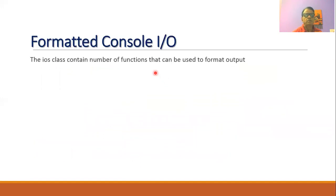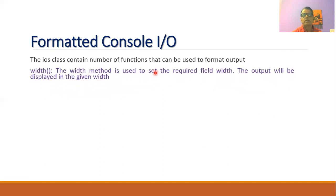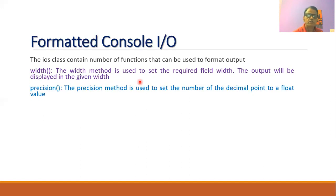Now let us look at certain formatted console input/output operations. The ios class contains a number of functions that can be used to format the output. Many times while writing C++ programs we use unformatted input and output, but it is also possible to use formatted input and output. For example, the width() function is used to set the required field width so that whenever we want to display output with a specific width, this function can be used. The precision() function is used to set the number of decimal points for a float value.